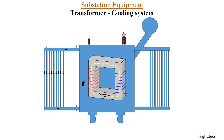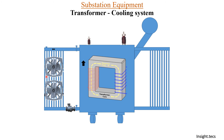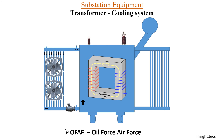Coming to our last section: here, fans are also placed on the radiator wings and an oil pump is also used to pump the oil and cool it more easily. The cooling system here is very quick, so the oil inside the transformer remains at a very normal temperature. As the oil remains at normal temperature, the working efficiency at which the transformer operates will be very high, making it a much more efficient transformer compared to other cooling systems. This is called oil force air force cooling system.